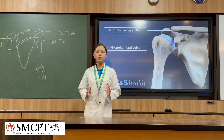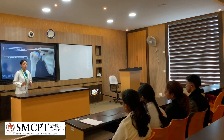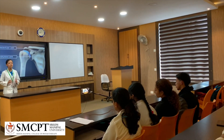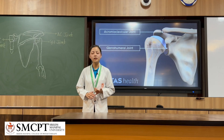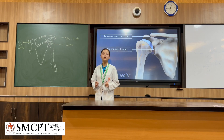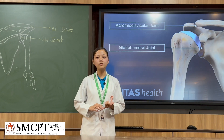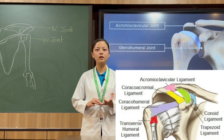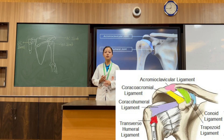Coming to the glenohumeral joint, it is a ball and socket type of synovial joint. The head of the humerus is four times larger than the glenoid fossa for better articulation and mobility. The ligaments present are the capsular ligament, reinforced anteriorly by the superior, middle, and inferior glenohumeral ligaments, the transverse humeral ligament, coracohumeral ligament, and the glenoid labrum.